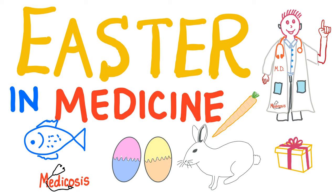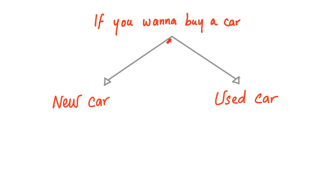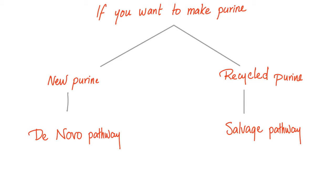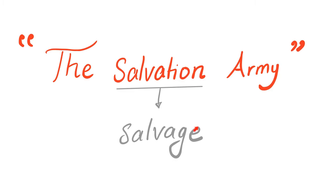There are only two ways to buy a car: you either buy a new car or a used car. Same thing — if you want to make purine, you either make new purine or you recycle the old purine. This is called the de novo synthesis pathway, and this is called the salvage pathway — like the Salvation Army, because they salvage, reuse, and recycle stuff.